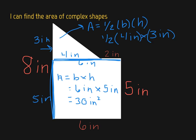So we have one half times 12, which gives us six inches square. And if we add that together, we have 30 inches squared plus six inches squared would give us 36 inches squared would be our entire area of this complex shape.